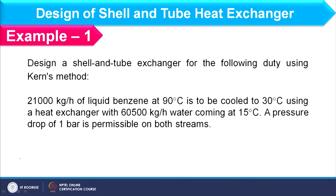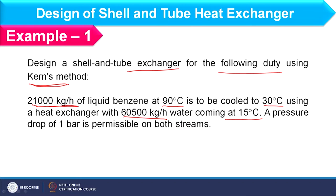In example one, design of a shell and tube heat exchanger should be carried out for the following duty using Kern's method. 21,000 kg/hr of liquid benzene available at 90°C is to be cooled to 30°C. This benzene is the hot stream to be cooled, and that cooling should be done by exchanging heat with 60,500 kg/hr of water available at 15°C. A pressure drop of one bar is permissible on both sides.